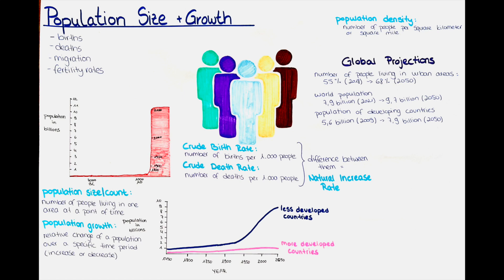What does population size and growth measurement involve? Measuring population size and growth involves the collection and analysis of data on several variables including births, deaths, migration and fertility rates. The most basic measure of population size is the number of people living in a particular area at a given point in time, which is referred to as the population count.